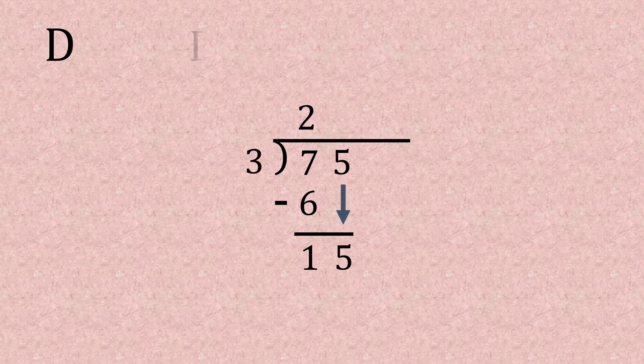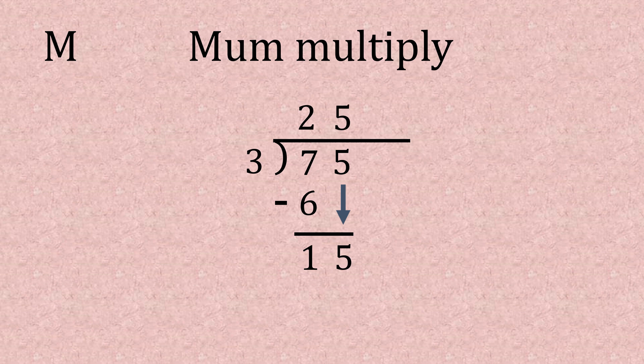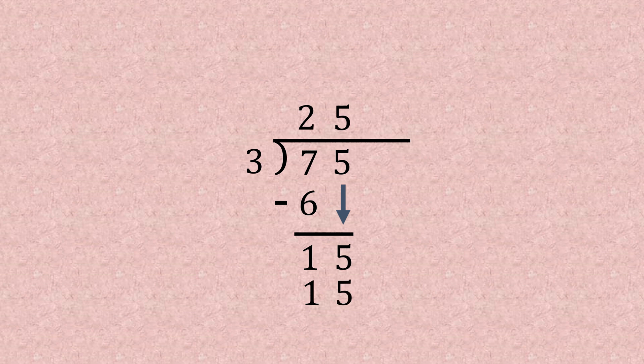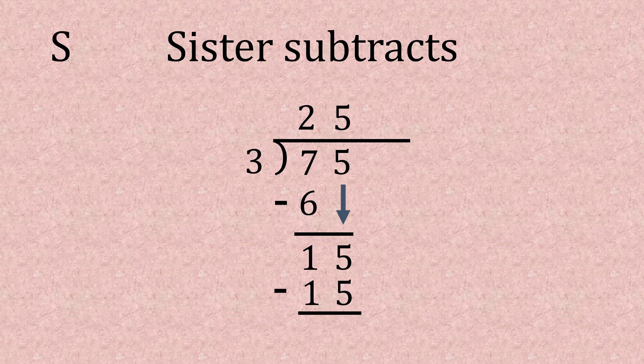So 15 divided by 3 gives us 5, put that on your top line. Then M for multiply, 5 multiplied by 3 is 15. And you know what's next? Subtract, sister. 15 subtract 15 is 0. So there you have it, and our answer is 25.